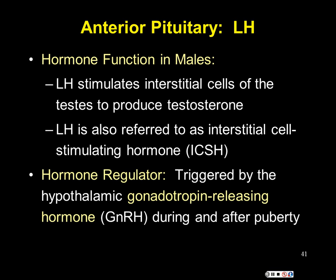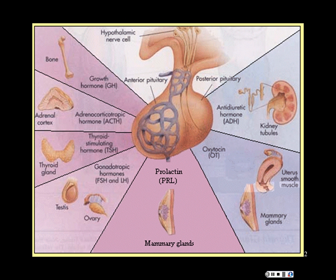Since LH is a gonadotropin, GnRH regulates its release. That concludes our anterior pituitary hormones. We're now going to transition away from the brain to other endocrine glands, starting with the thyroid gland and its hormone production.